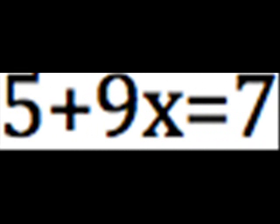Read it. Then you go 5 plus 9x equals 7, and that's your equation after you collect the like terms.